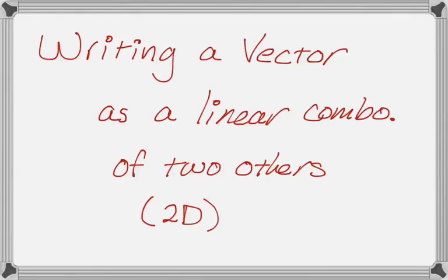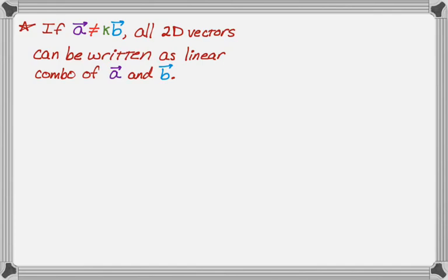Okay, in this video we're going to be writing a vector as a linear combination of two other vectors. So this is a 2D example. If you're working on three dimensions, it's the same idea, you just need three vectors. So let's see what we know. So first of all, if A is not equal to K times B, which means that the vectors A and B are not parallel to each other, they're not scalar multiples,